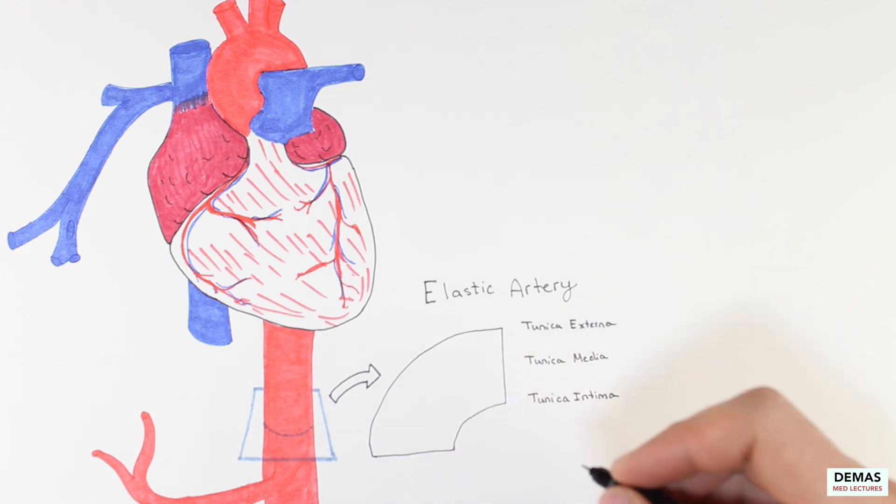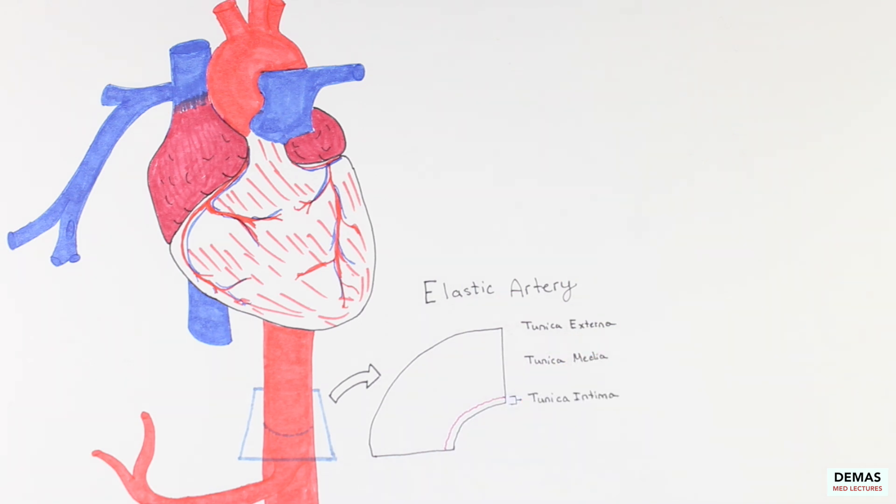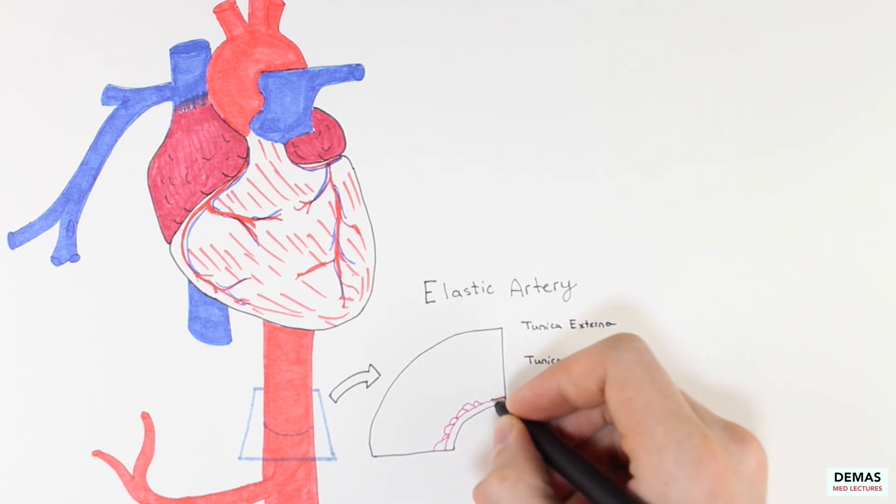The thickness of each of these layers differ between artery type and veins, and these differences reflect the needs of each part of the vasculature. The elastic arteries, for example, have a single layer of endothelial cells which comprise the tunica interna.